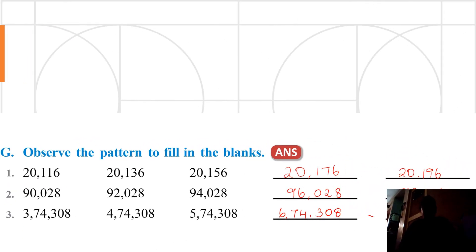Here, the question is: you have to observe the pattern and fill in the next two blanks. The first answer is 20,176 and 20,196. The second answer is 96,028 and 98,028. The third answer is 6,074,308 and 7,074,308.